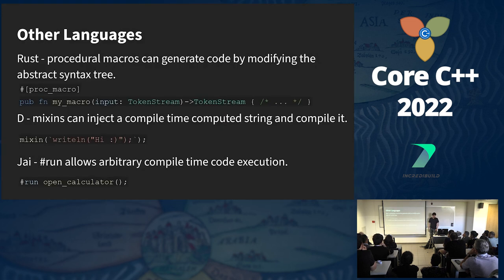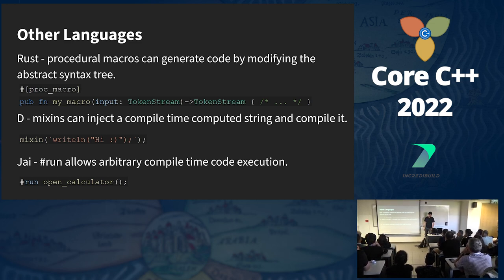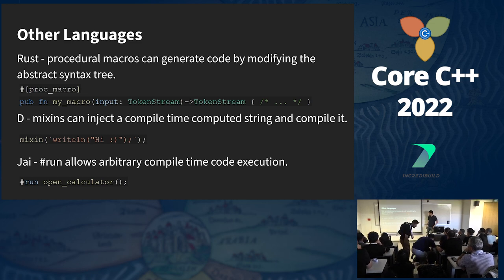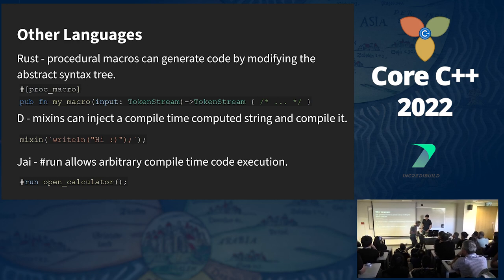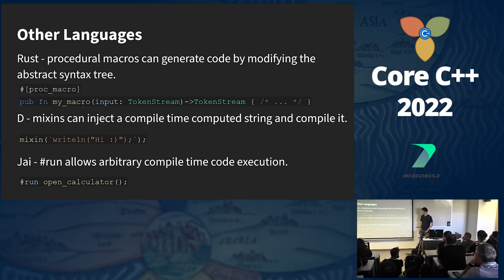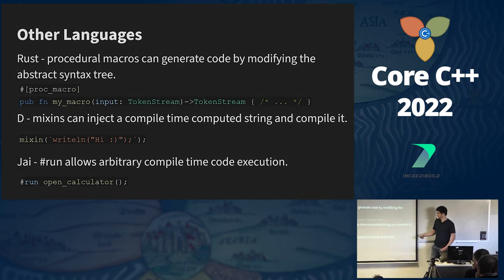Looking at features from other languages: Rust has procedural macros that can generate code by modifying the abstract syntax tree — a macro takes a token stream of the current code and returns a token stream of the modified code. D-mixins can inject a compile-time computed string and compile it in place. And Jai allows arbitrary compile-time code execution, so unlike C++ where you can only do certain things in a constexpr function, in Jai you can do everything during compilation — for example, open the calculator or write to a file.